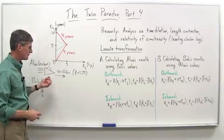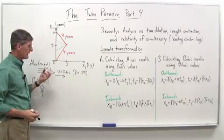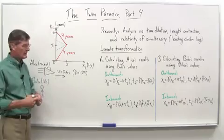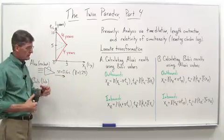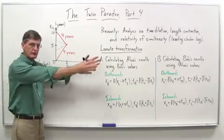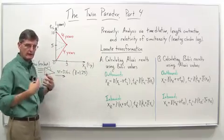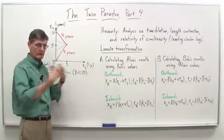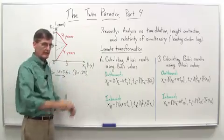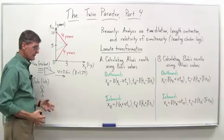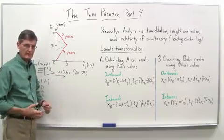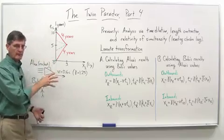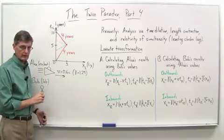Another thing to mention here — some of you are probably still thinking, aren't they symmetrical? Bob watches Alice go away and come back again. Alice in her spaceship from her frame of reference watches Bob go that way, the star come this way, and then back again. It seems very symmetrical. But we made the point that only Alice has the acceleration involved, and Bob actually does not feel any acceleration.